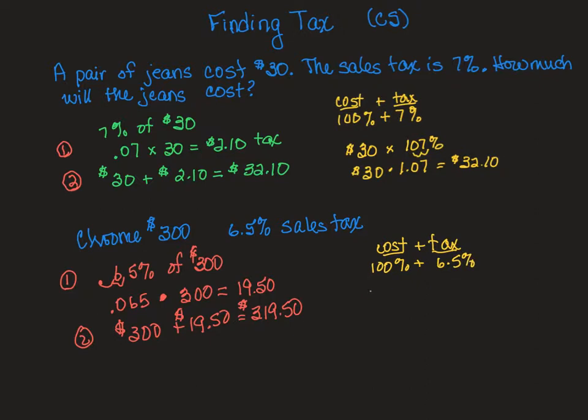that's going to be $300 times 106.5%, which is going to be $300 times 1.065. And that is also going to get me $319 and 50 cents.